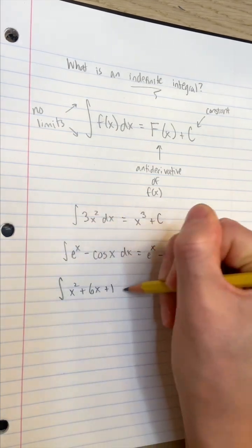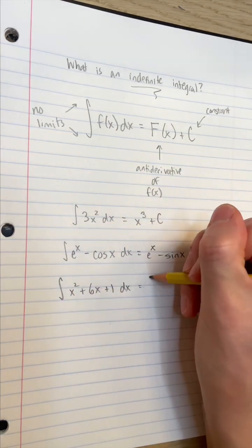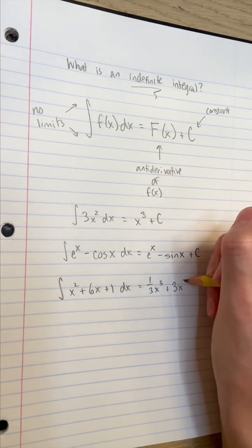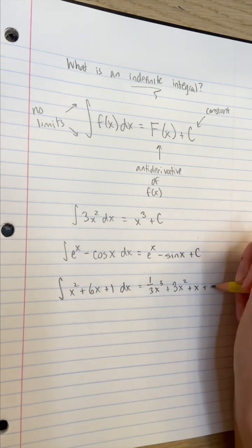Let's do one more. Whose derivative is x squared? 1 third x to the power of 3 plus whose derivative is 6x? 3x squared plus whose derivative is 1? x. And plus c.